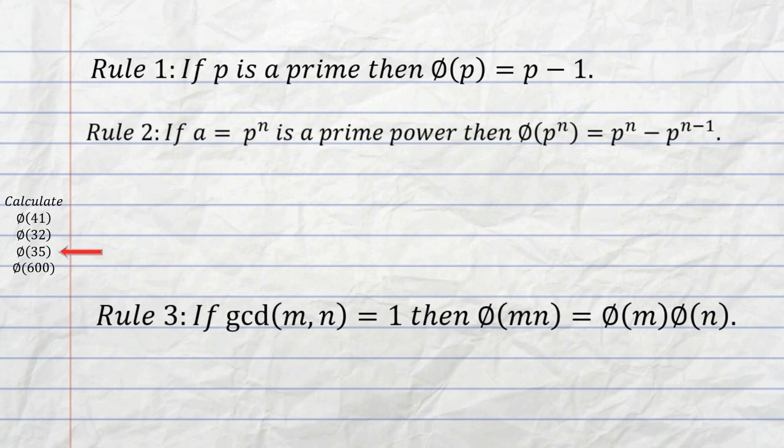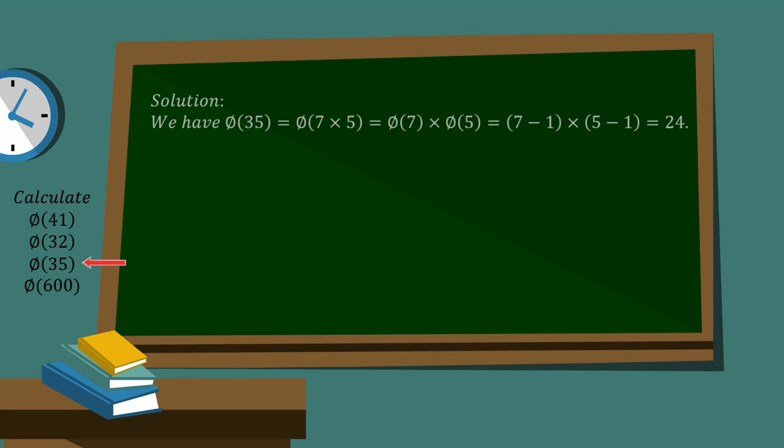So we can use that in this case, because we've got phi of 35 is equal to phi of 7 times 5 equals phi of 7 times phi of 5. We can use that rule 3, because 7 and 5 have a GCD of 1. And now we just go 7 minus 1 times 5 minus 1, which is the rule for the primes, and we get 24.